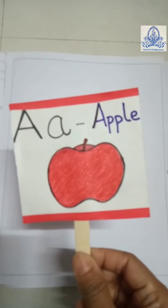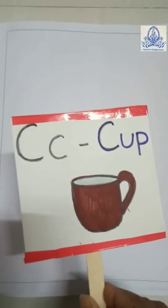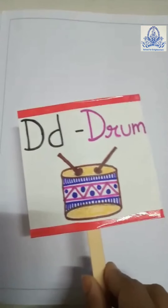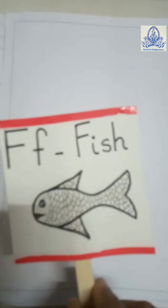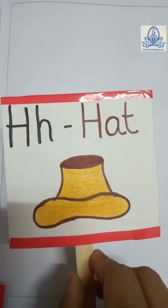Now let us revise some alphabets with their pictures. A for an apple, B for a ball, C for a cup, D for a drum, E for an egg, F for a fish, G for grapes, H for a hat.